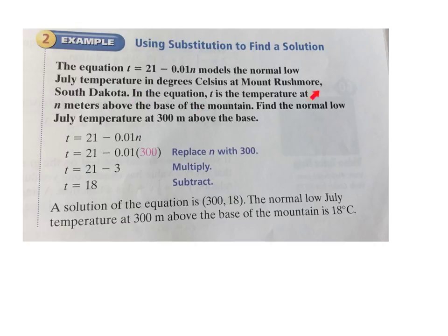In the equation, T is the temperature at n meters above the base of the mountain. Find the normal low July temperature at 300 meters above the base. So in other words, take this 300, plug it in for n in the original equation, and that will give us the temperature. So 0.01 times 300. So again, plugging that 300, 300 times 0.01 is 3, so 21 minus 3 is 18.